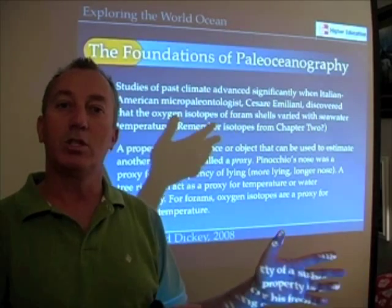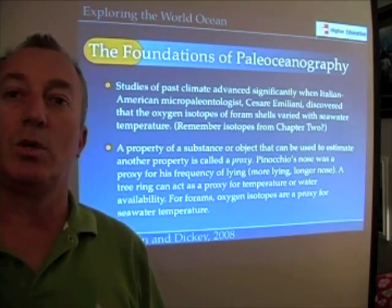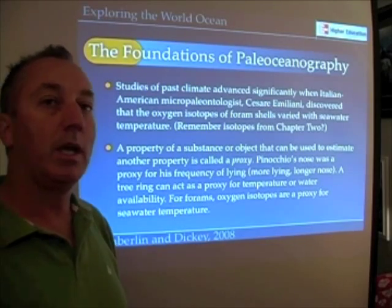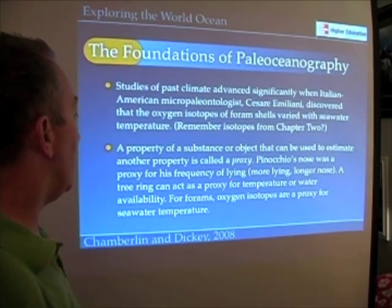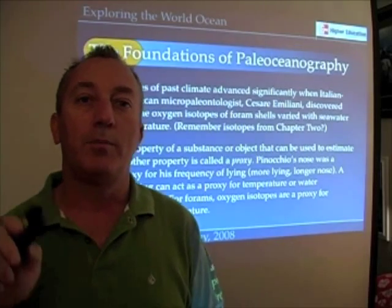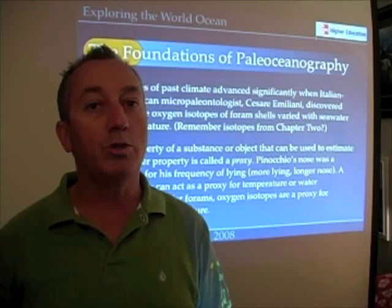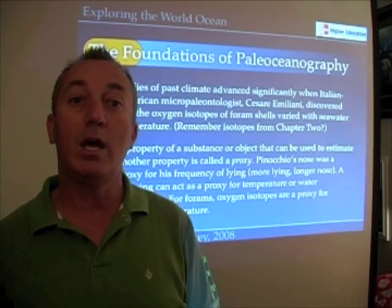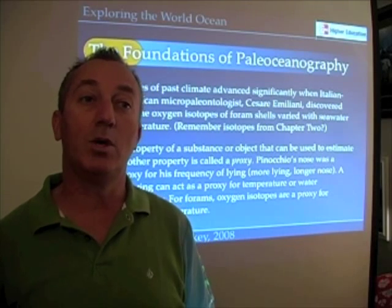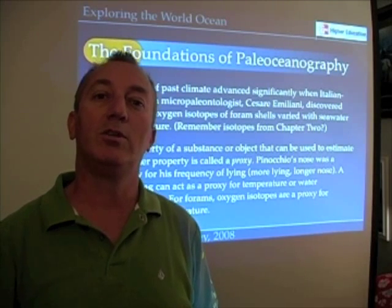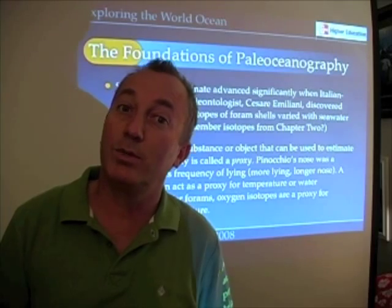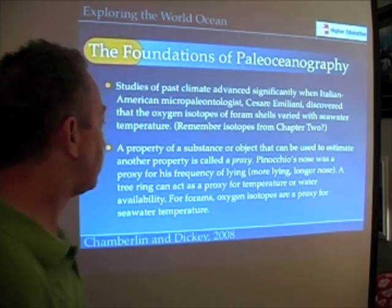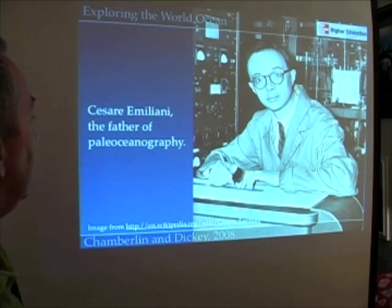Tree rings are just as useful, along with other kinds of isotopes and other proxy measures. As an example, I like to use Pinocchio: his nose got longer or shorter depending on whether he was telling the truth or lying. The longer you saw Pinocchio's nose, the more you knew he was lying. A proxy is a lot like that.